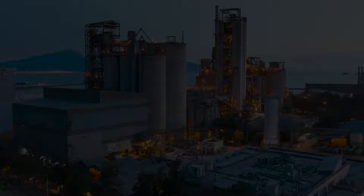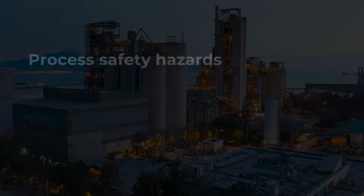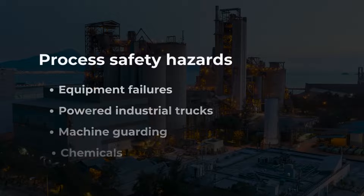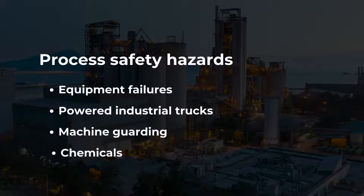There are four main types of industrial safety hazards that you should identify and control. The first type includes process safety hazards, which come from things like equipment failures, powered industrial trucks, machine guarding, and chemicals.